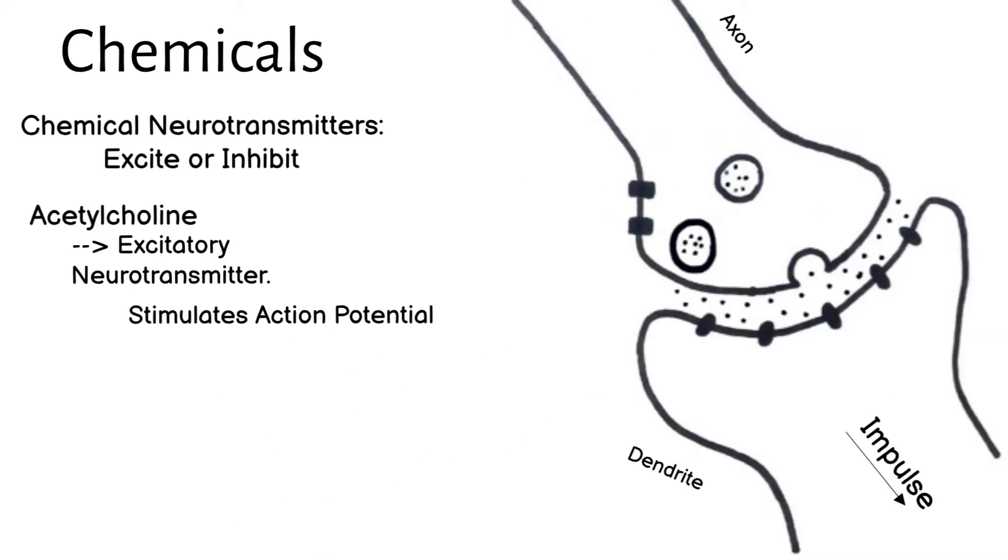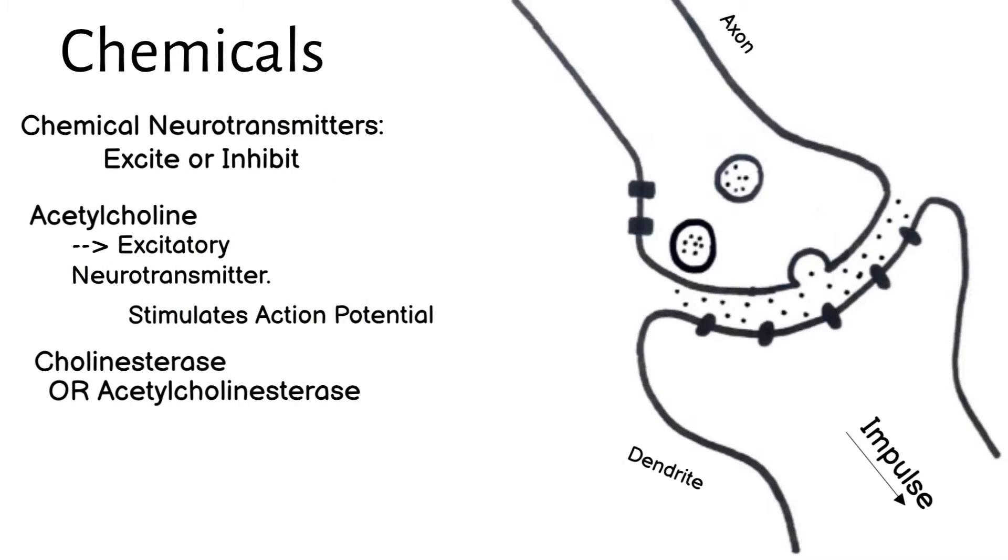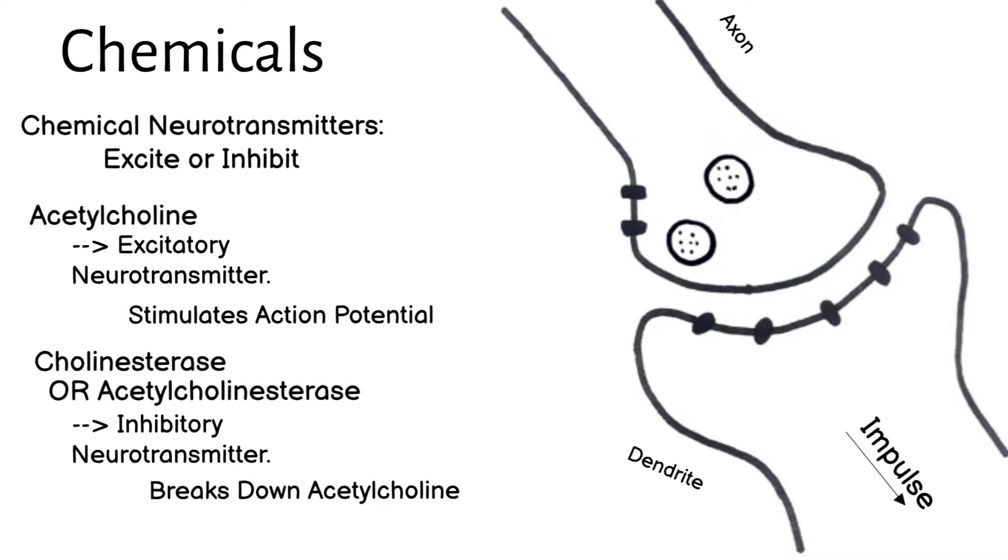With this acetylcholine floating around, there could be a problem with constantly exciting the next neuron. Cholinesterase, which is also known as acetylcholinesterase, is an inhibitory neurotransmitter. This breaks down acetylcholine. This is an inhibitory neurotransmitter as it blocks depolarization and doesn't allow an action potential to happen.